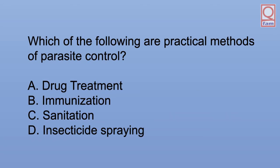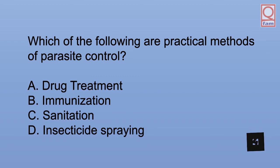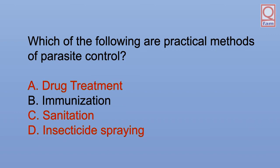Which of the following are practical methods of parasite control? A. Drug treatment. B. Immunization. C. Sanitation. D. Insecticide spraying. The answer is A, C, and D: Drug treatment, sanitation, and insecticide spraying.